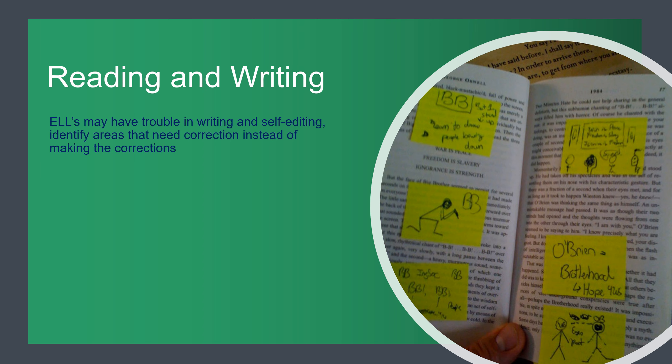Reading and writing can be quite difficult. English language learners may have trouble with writing and self-editing. Identify areas that need correction instead of making the corrections for them. For example, I had a student from France who always used a lowercase 'i' for the word 'I,' so I would circle his paragraph and ask him to find the errors, since capitalizing was not natural for him in fifth grade.